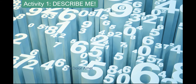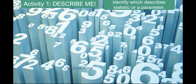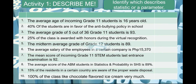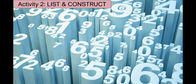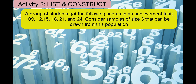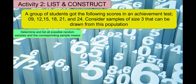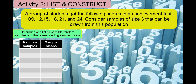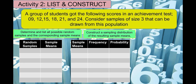For your activities: Activity 1, entitled 'Describe Me,' requires you to identify whether each situation describes a statistic or a parameter — write your answer for numbers 1 to 10. Activity 2, 'List and Construct,' uses scores 9, 12, 15, 18, 21, and 24. Consider samples of size 3, list all possible random samples and their sample means in a table, then construct a sampling distribution table and draw a histogram with probability on the vertical axis and sample means on the horizontal axis.